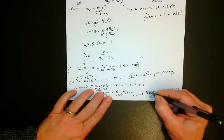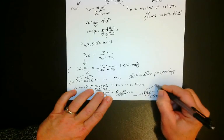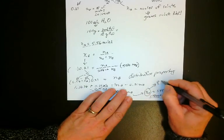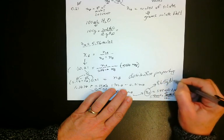So then I go 1.48 times 58.443. And my final answer for NB, totally out of space here, is 86.5 grams of sodium chloride.